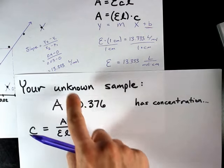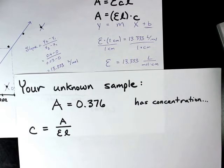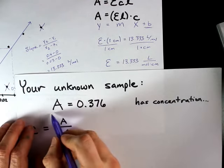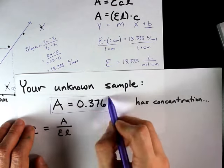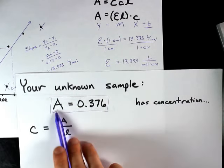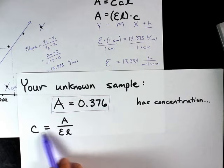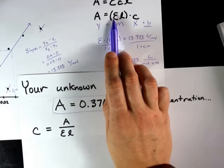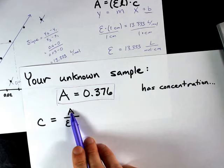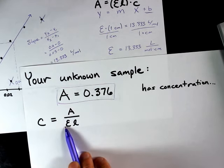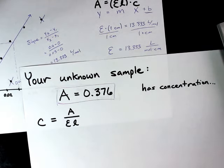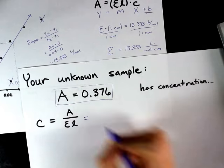Okay, now, you probably also were given an unknown sample, and you had to run it through the spectrophotometer and figure out what its concentration was. Now, if you're given the absorbance, you can calculate the concentration by rearranging that original formula. The concentration is the absorbance divided by the molar absorptivity constant and the path length again. I'm going to do it with you.